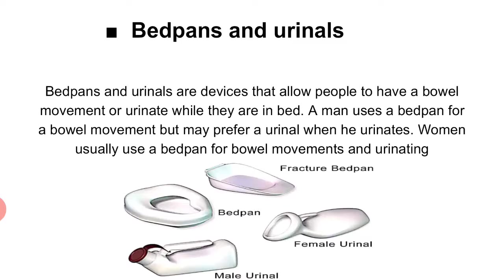Then bedpan and urinals. Bedpan and urinals — male urinals are used for male urination. Bedpan is used for female urination. Fracture bedpan — so this patient can have a hip fracture or lower extremities fracture, so this is a female urinal for such cases. What happens if there is a patient who is bedridden, unconscious, or in bed — so bedpan can be used for such patients.